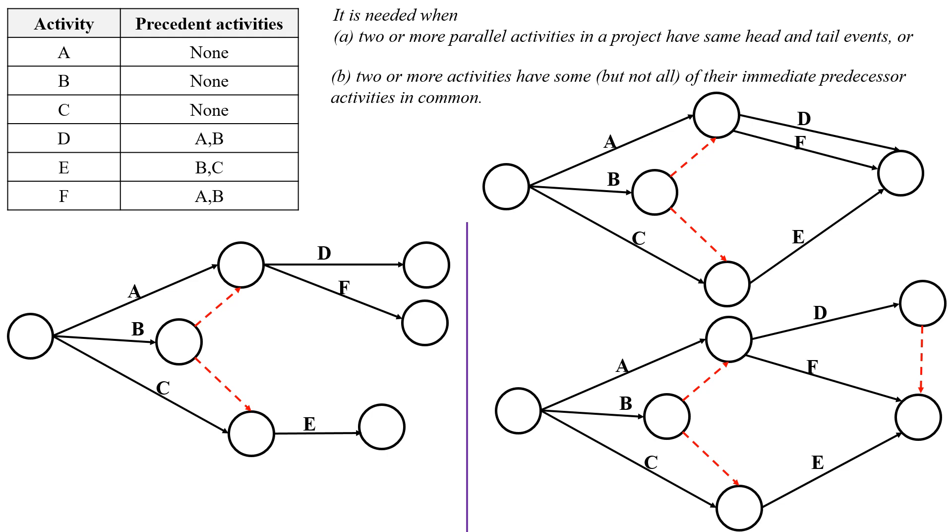Now the network diagram is completed. Give the numbering for the events according to the Fulkerson rules. This is the first event, second, third, four, five, and six. So now we completed the network diagram for the given activities.